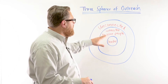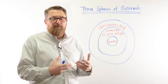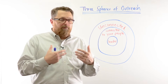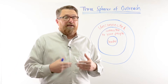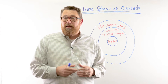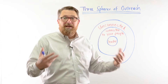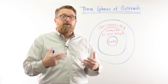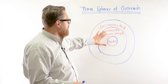The second one is people who are connected to your people. Let's say you have a church of 100 people, and each family is really connected with 20 other people — that means there are 2,000 people who are relationally connected with the people in our church. So that's another sphere.